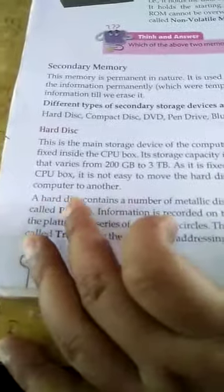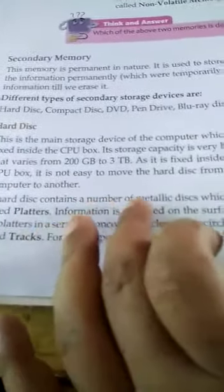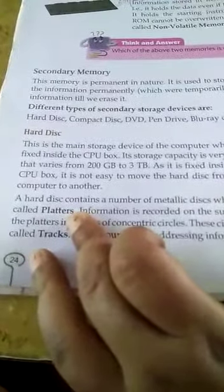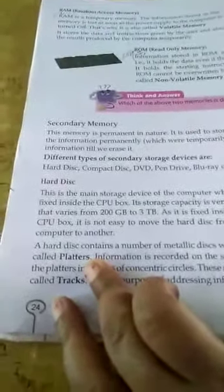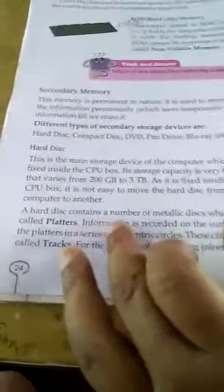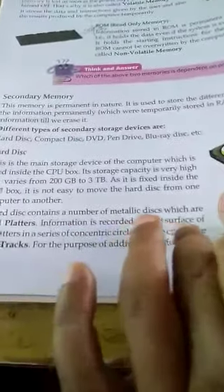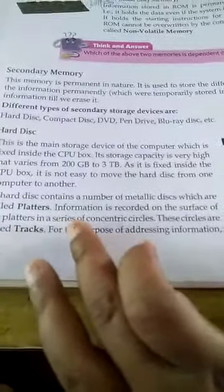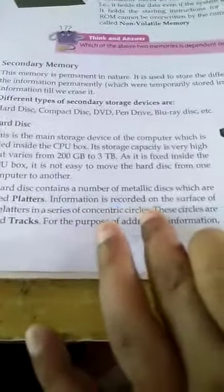A hard disk contains a number of metallic disks which are called platters. The information is stored on the surface of the platters in a series of concentric circles.